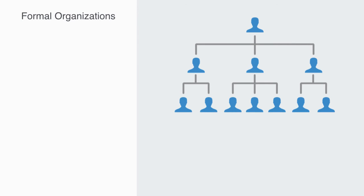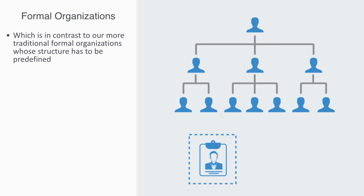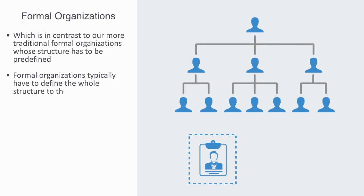Networks are a very informal system of organization, which is in contrast to our more traditional formal organizations like hierarchies, whose structure has to be predefined, and then the components fit into it. For example, we have job roles in our businesses, and employees have to fit into them. In these formal organizations, we would typically define the whole structure of the business before it starts operating, and once defined, it is temporarily closed — meaning anyone can't just walk in off the street and take up a job in the business.